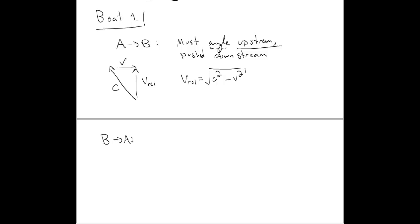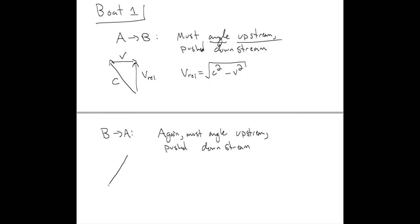For the next leg of the journey from B to A, again the boat must angle upstream because it's pushed downstream again. So we have a similar looking vector diagram where the boat is angled upstream, but it's pushed downstream by the river. So that the relative velocity is completely perpendicular to the direction of the river. And as before, that relative velocity is the same at C squared minus V squared square root.